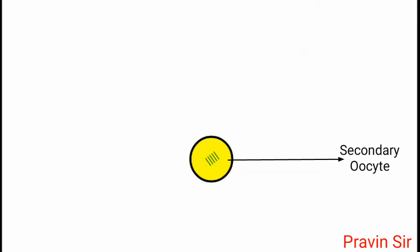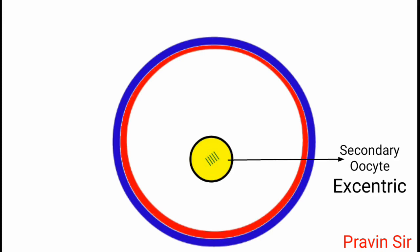This is secondary oocyte. It is excentric in position. It is not exactly in the center.